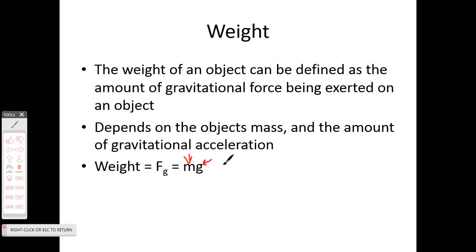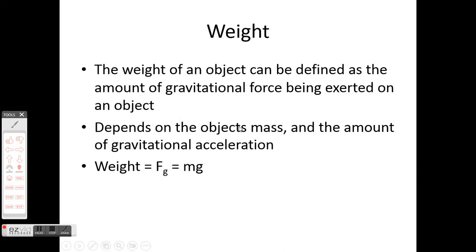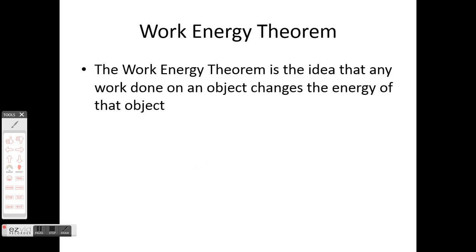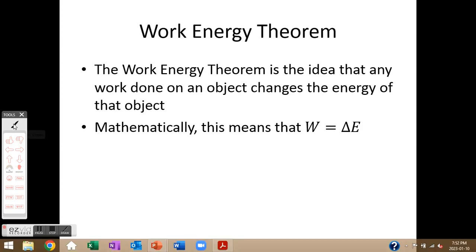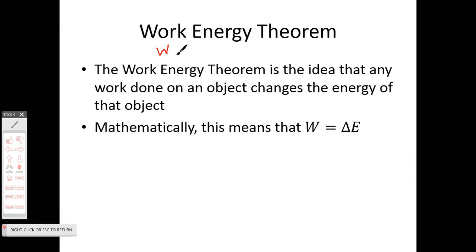When we deal with weight, we're looking at mass in kilograms and g, which is 9.81 meters per second squared that we looked at in class. That leads into the work-energy theorem — the idea that any work done on an object changes the energy of that object. Mathematically, work equals the force exerted on an object multiplied by its displacement, assuming both are in the same direction. The work-energy theorem extends that and says this work equals the change in energy of that object.